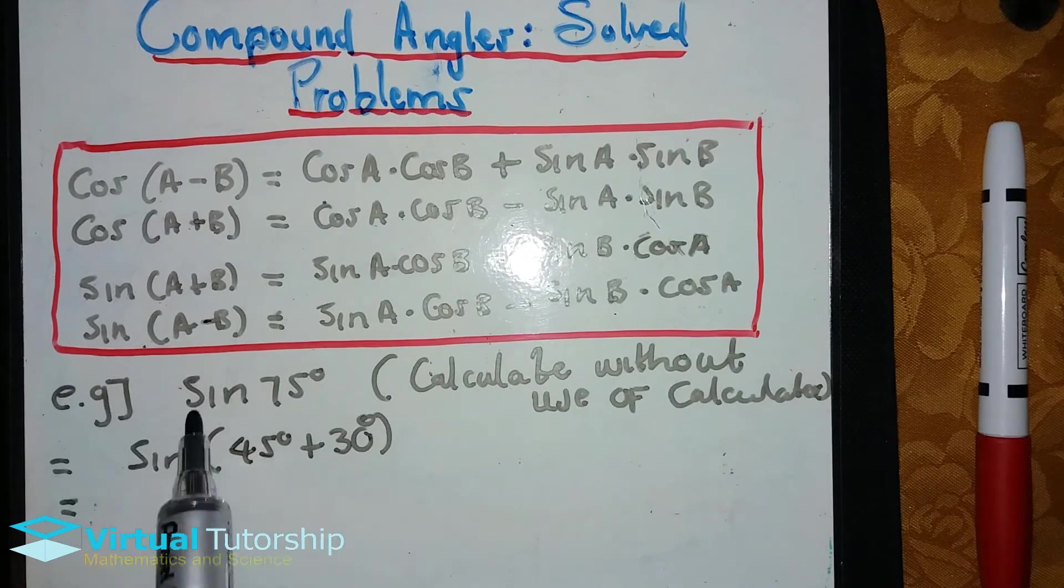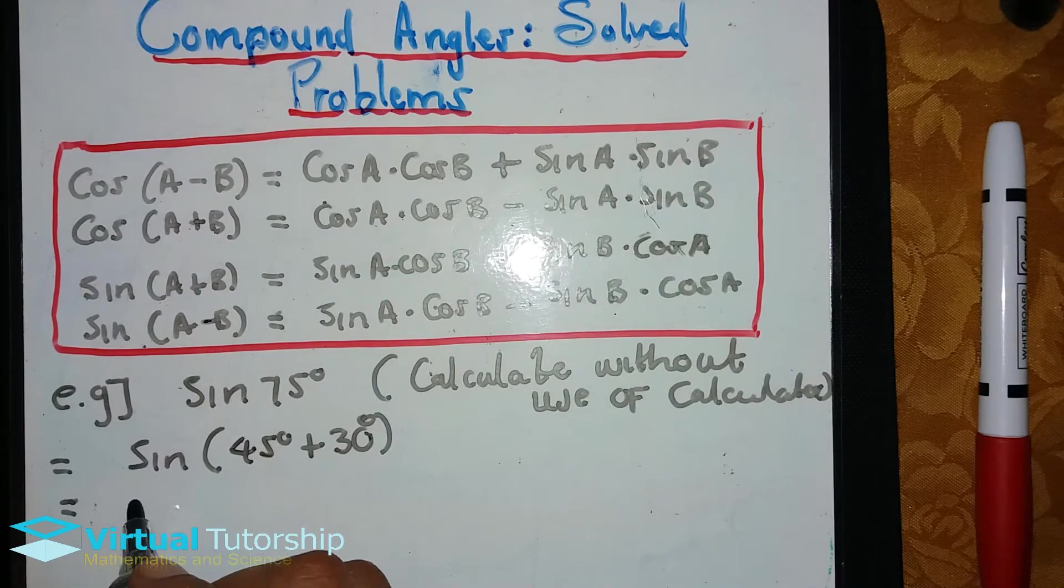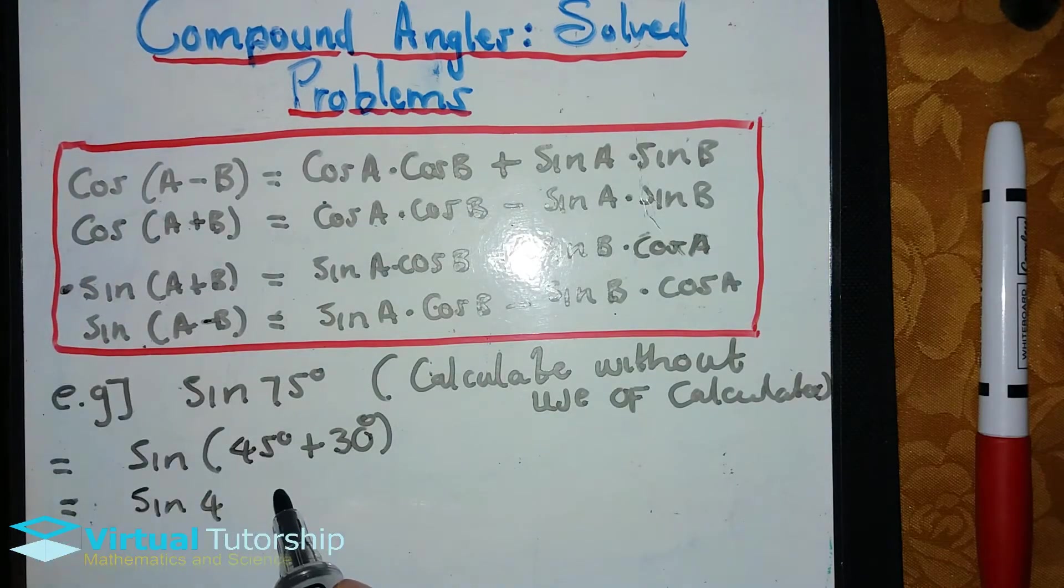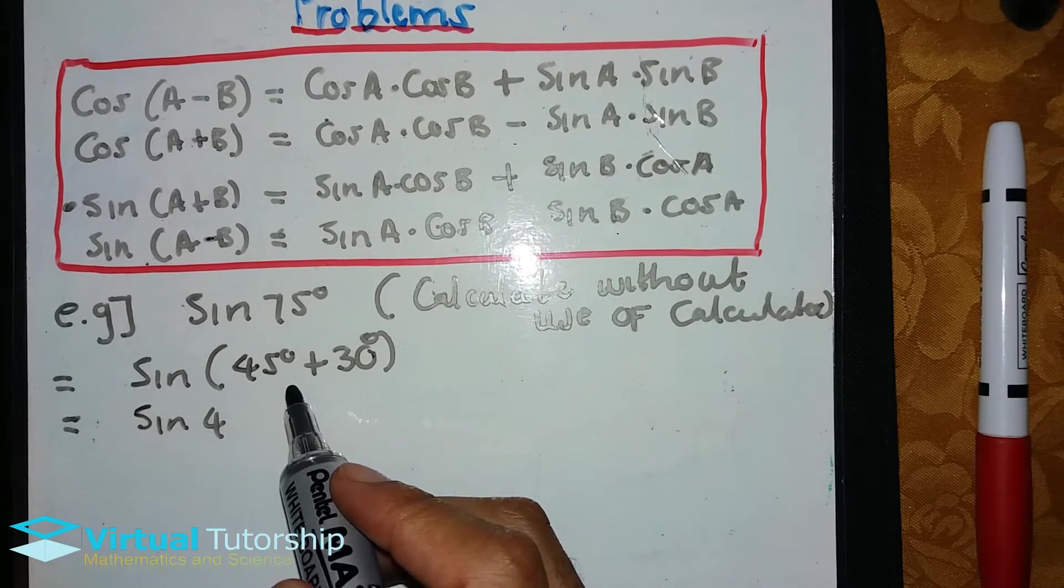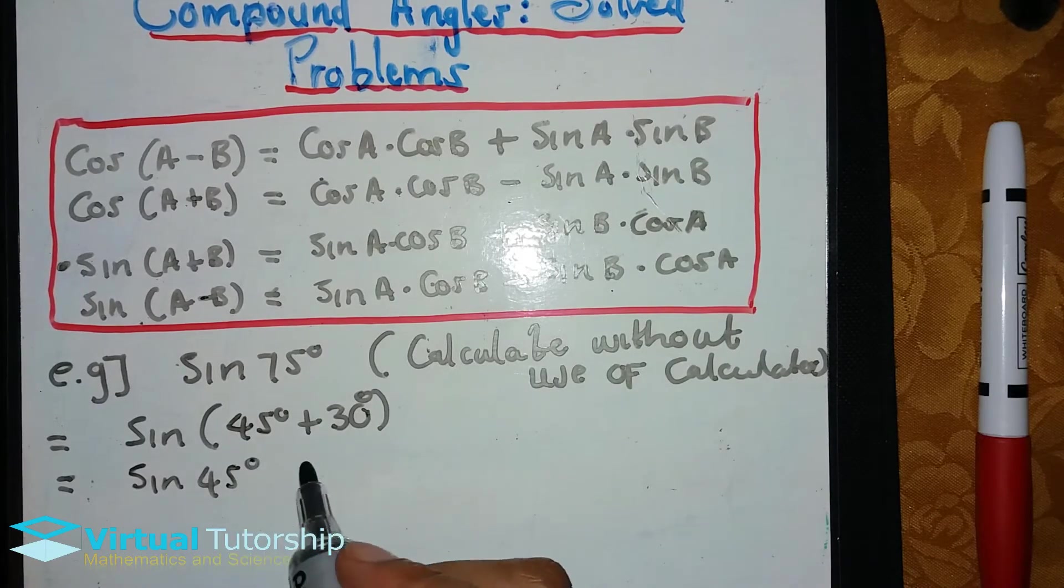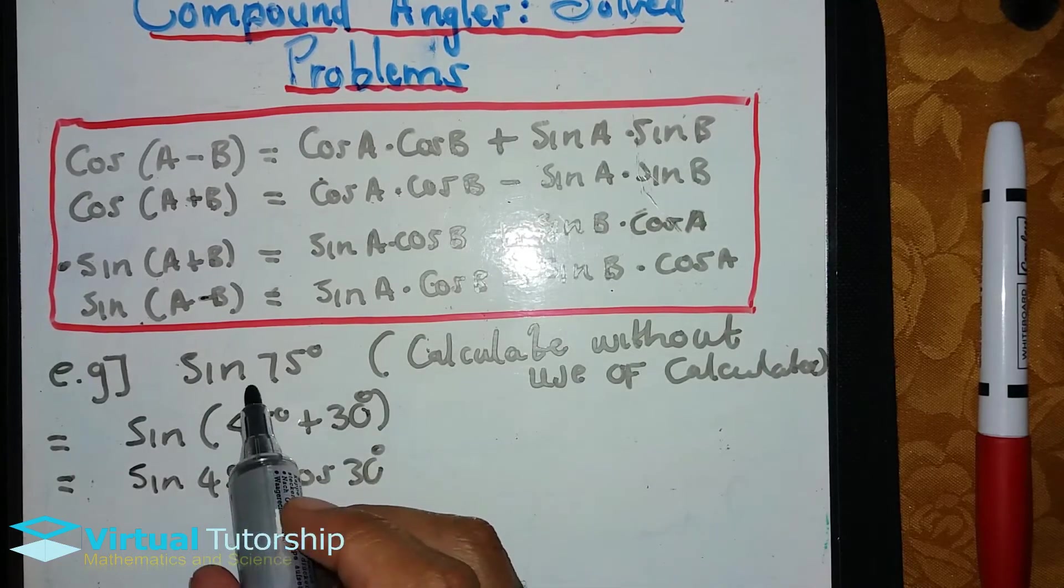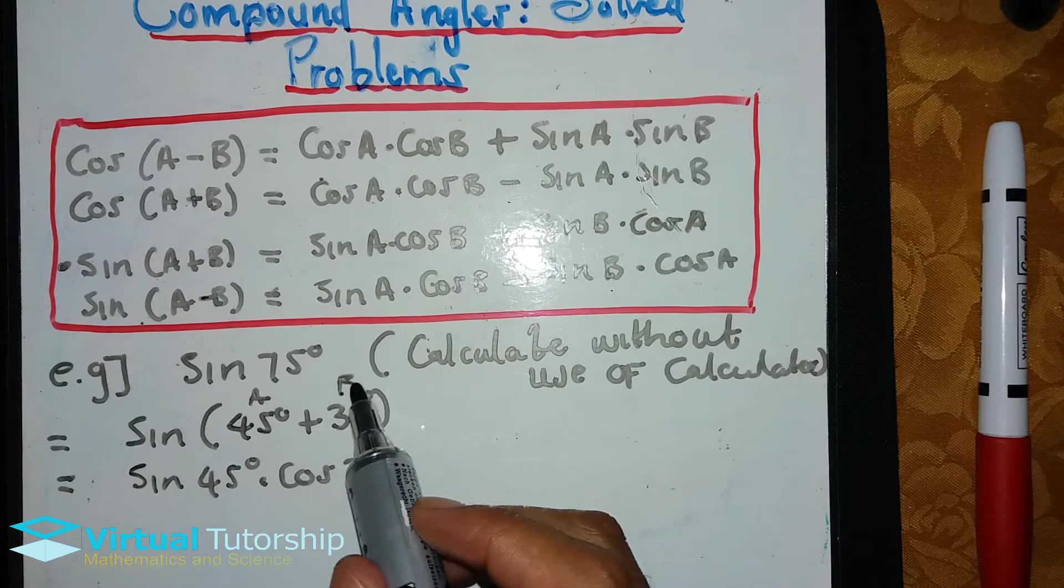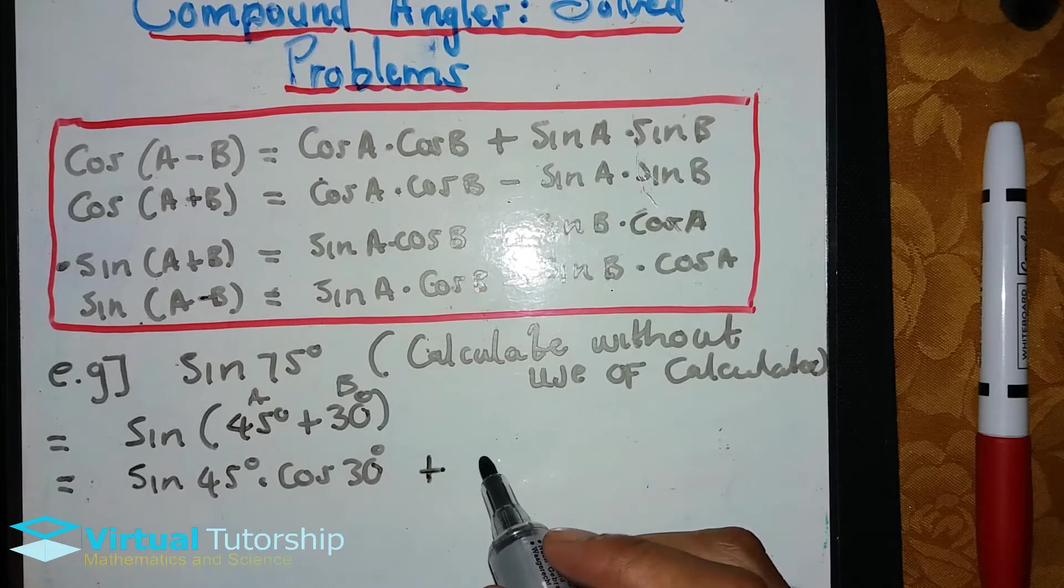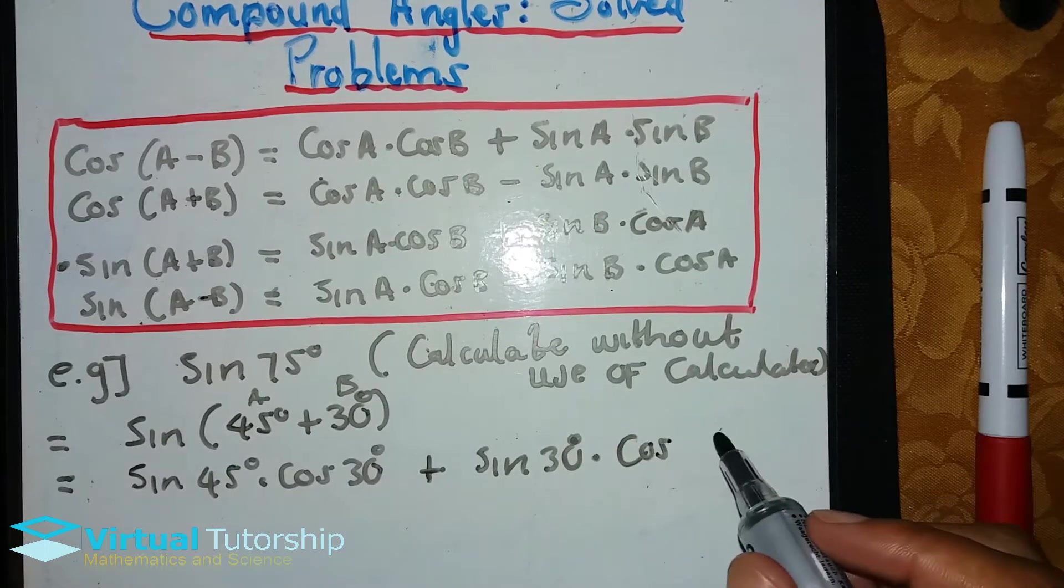This is also applying one of the compound angles above. It's the sine compound angle with a plus in between. So this will represent sine 45. In other words, we will apply this formula now. We are born and the 45 degrees times cosine 30 degrees. So the 45 acts as A and the 30 degrees acts as B.